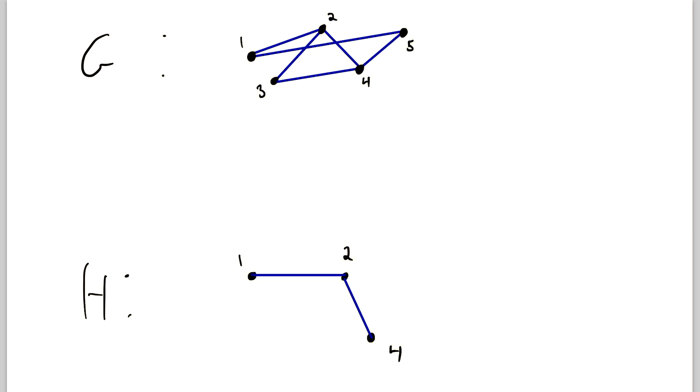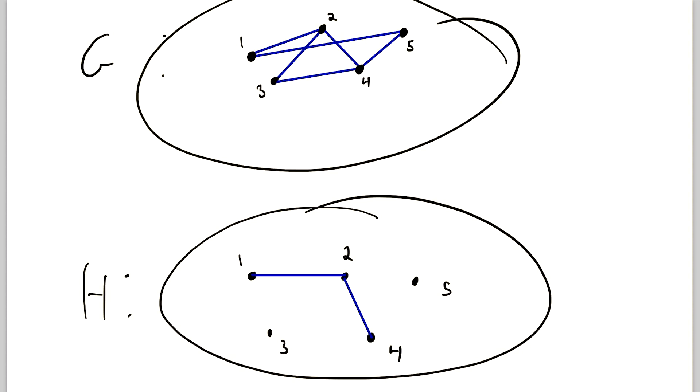So then what do we have to change about H to make it a spanning subgraph? Well, we have to make its vertex set equal to G's vertex set. So we'll add in those extra vertices. We'll put the 5 right here and then we'll put the 3 down here. Now the vertex sets are equal and of course H is still a subgraph of G. So because it's a subgraph of G and it has an equal vertex set, this graph is a spanning subgraph of that graph.